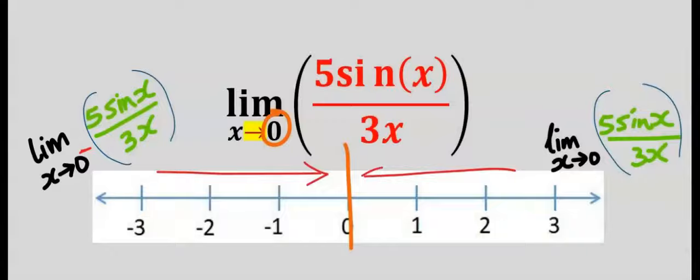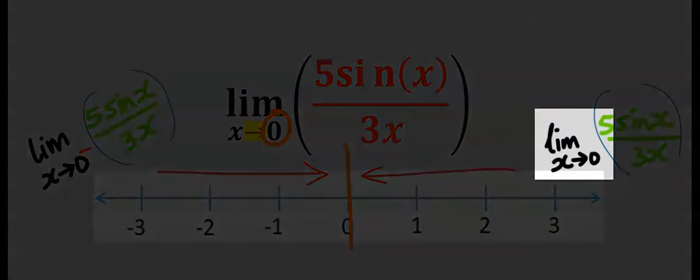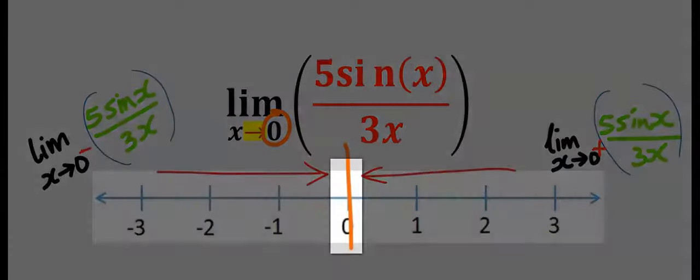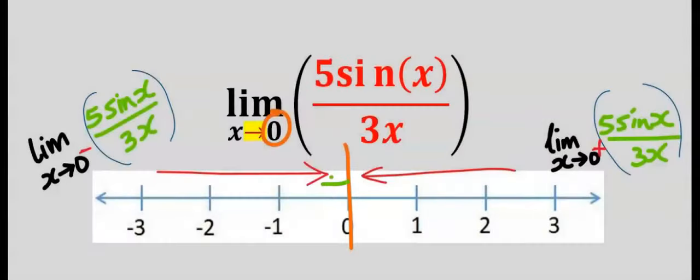Likewise, we are going to approach this zero from the right-hand side, and to indicate this we are going to put a plus on top of the zero. Next, consider some values a bit off the zero to the left and just a few values a bit off to the right of zero.